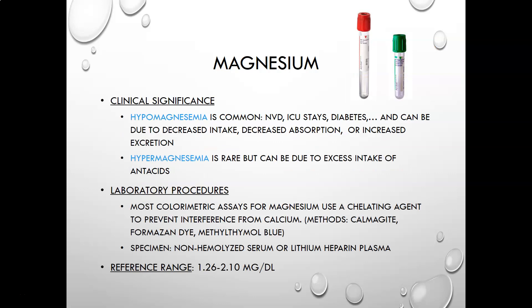Clinical significance of magnesium: hypomagnesemia is the most common disorder. Causes include nausea, vomiting, diarrhea, ICU stays, diabetes, and many more. These can be due to decreased intake — related to eating a lot of processed food — decreased absorption, which can be related to GI issues where inflammation prevents absorption, or increased excretion through the kidneys or through diarrhea.